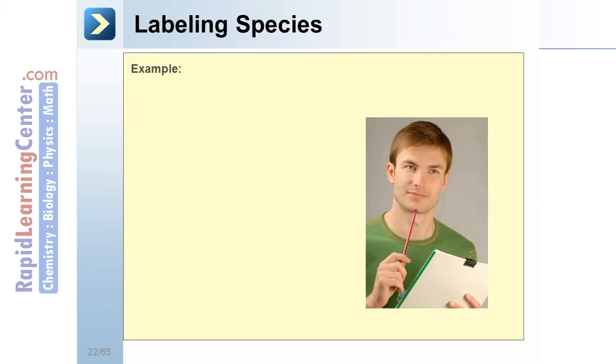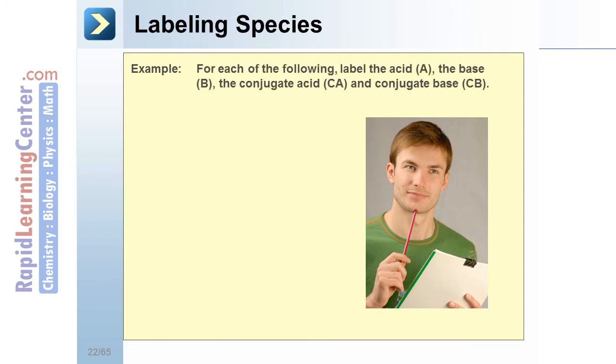It's important to be able to recognize species in a reaction. For these reactions, label the acid, base, conjugate acid, and conjugate base.